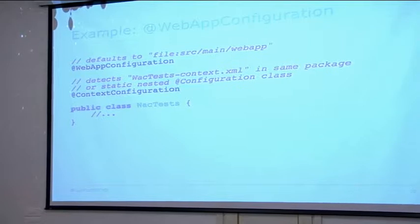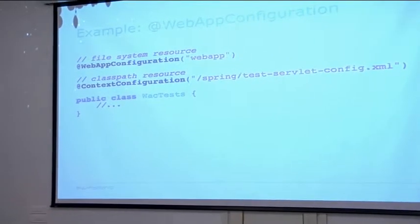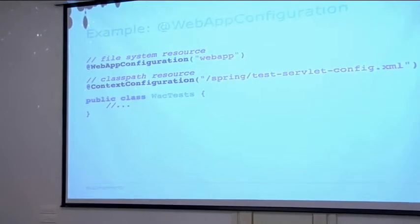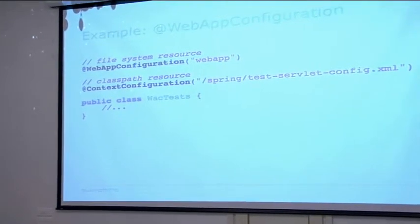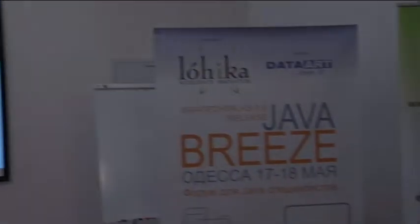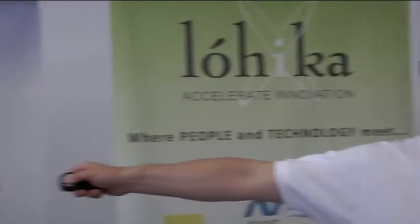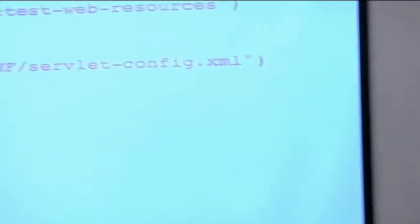We decided it made more sense for @WebAppConfiguration to look in the file system by default, since that's how you'll be building your module. With @ContextConfiguration, classpath resources make more sense. If you add values without specifying whether it comes from the file system or classpath, @WebAppConfiguration defaults to a file system resource relative to the root of your JVM. You can always override the default resource type by specifying either 'classpath:' or 'file:' prefixes.